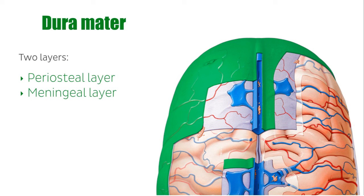You can't distinguish these two layers on this slide, but they're there. The dura mater also contributes to the subdural and epidural spaces. The meningeal layer of the dura mater tends to firmly attach to the underlying arachnoid mater. The potential space between them is called the subdural space.